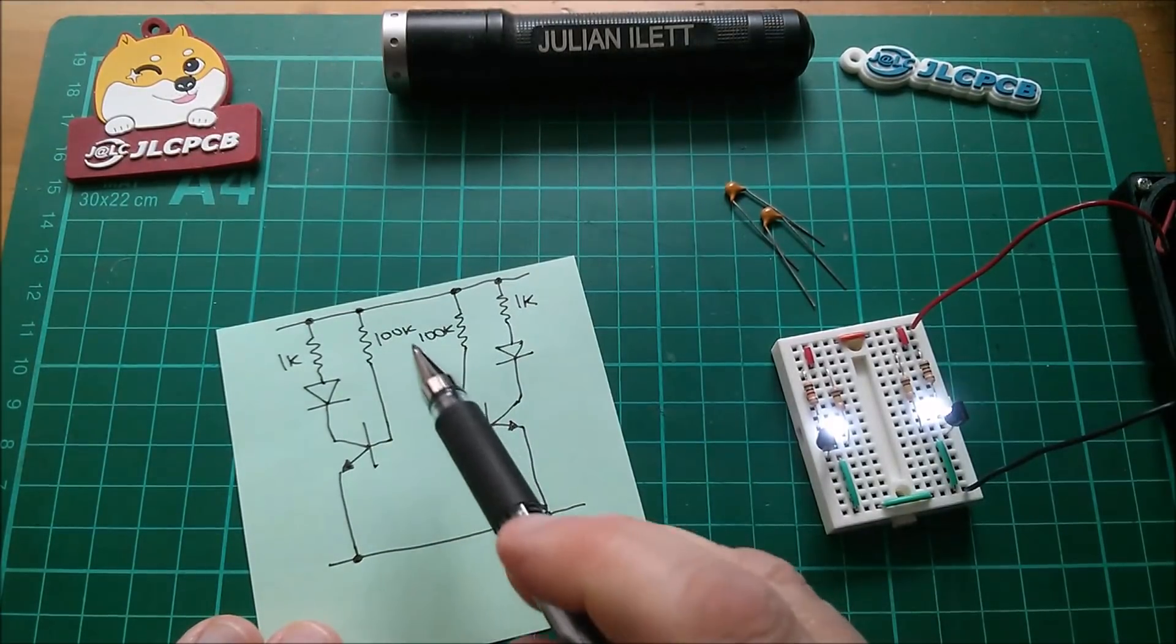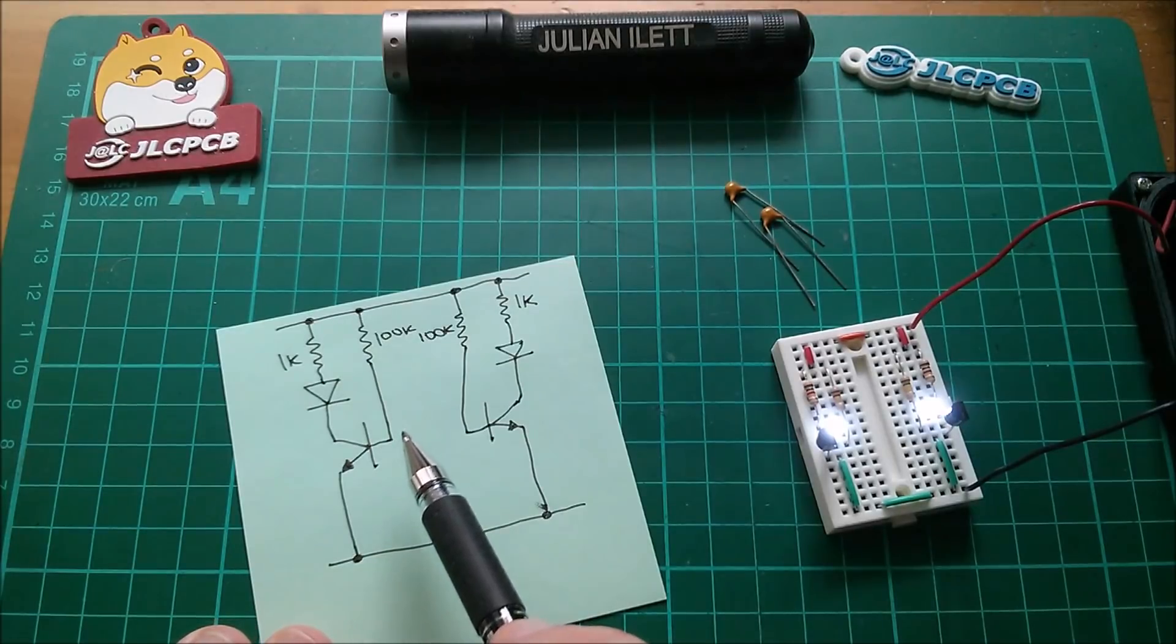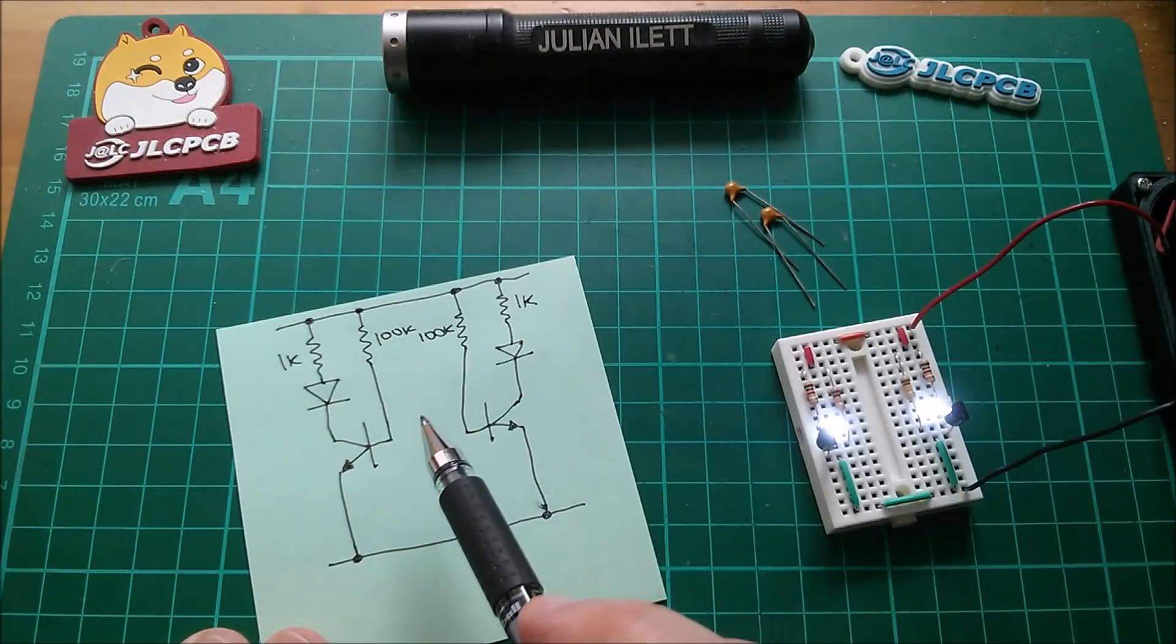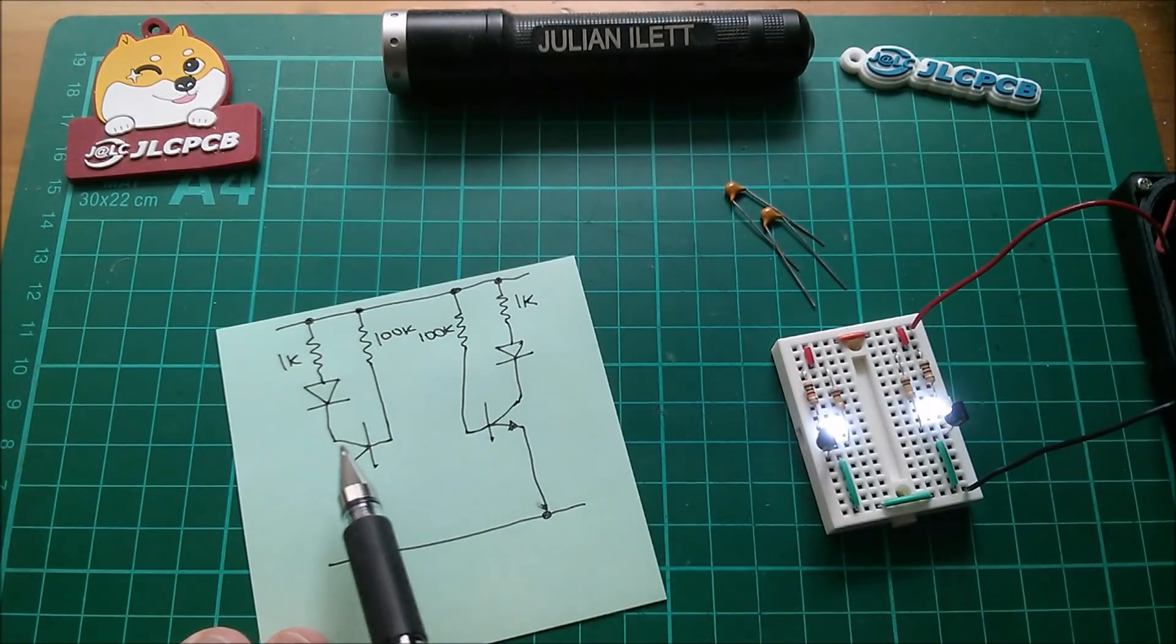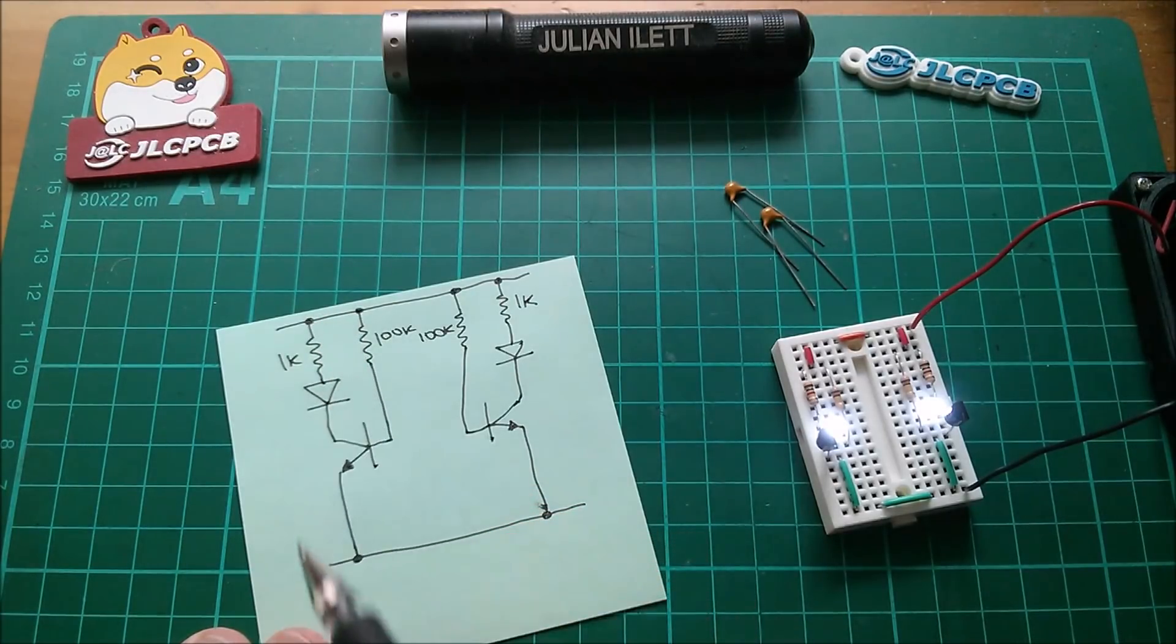So two circuits where the base resistor provides a small current through the base emitter junction. Transistor has gain, so that then it allows a larger current to flow through the collector emitter junction. And that provides a current limited by this 1K to light the LED.